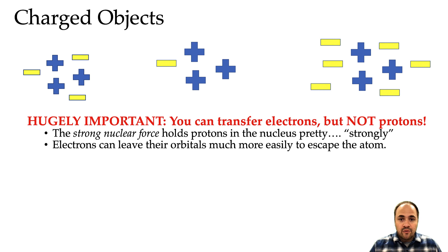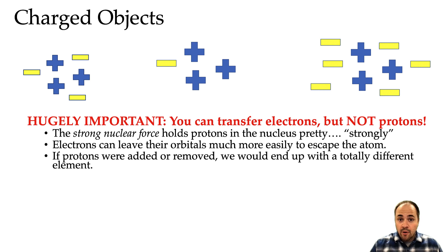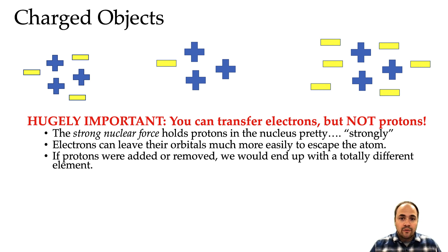If you did move a proton from one atom to another — if you removed a proton from an atom — it would become an entirely different element, and if you added a proton it would become an entirely different element as well. So protons are not moving. If we're talking about moving charge, it's always electrons, never protons — write that down.